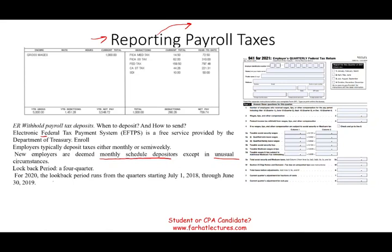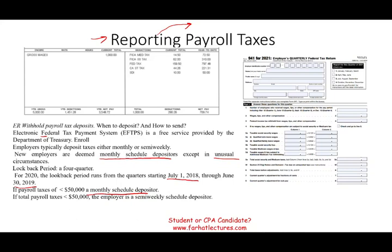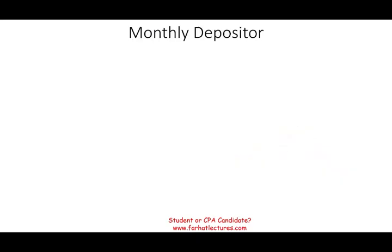For example, for 2020 the look-back period runs from the quarters starting July 1st through June 30th — essentially from mid-2018 to mid-2019. If your payroll taxes during that period were less than $50,000, you are considered a monthly depositor. If they were greater than $50,000, you become a semi-weekly scheduled depositor. Simply put, if you're withholding too much money, the government wants their money earlier. Less than $50,000 — monthly depositor; more than $50,000 — semi-weekly.